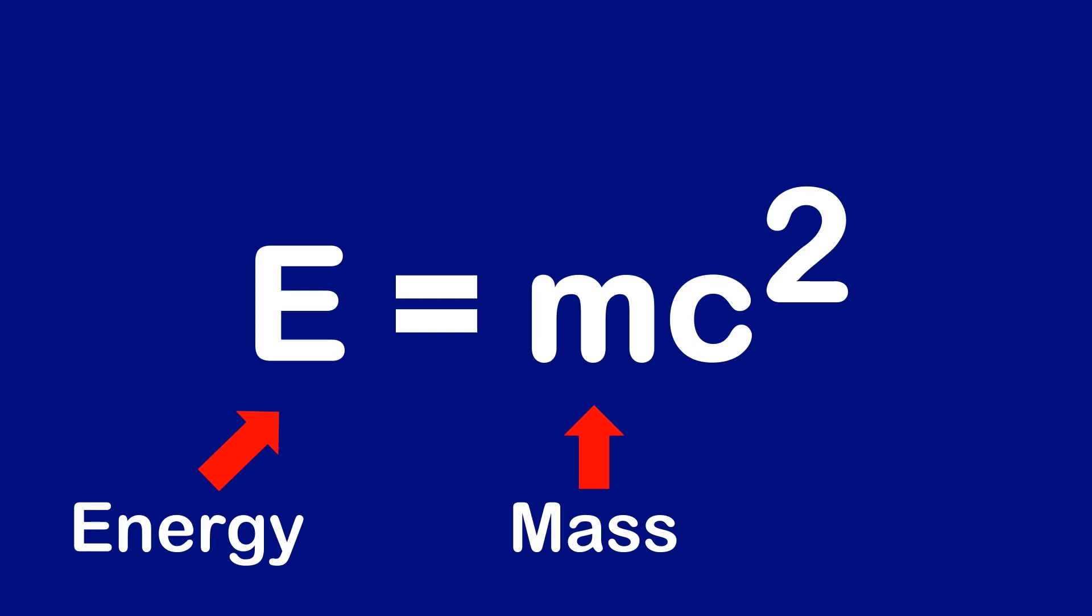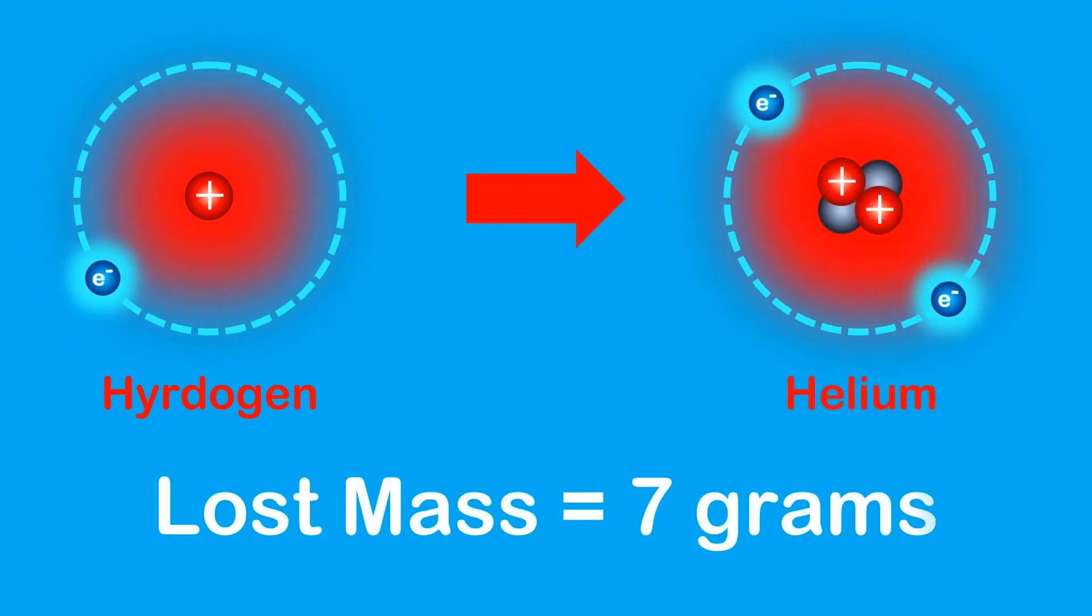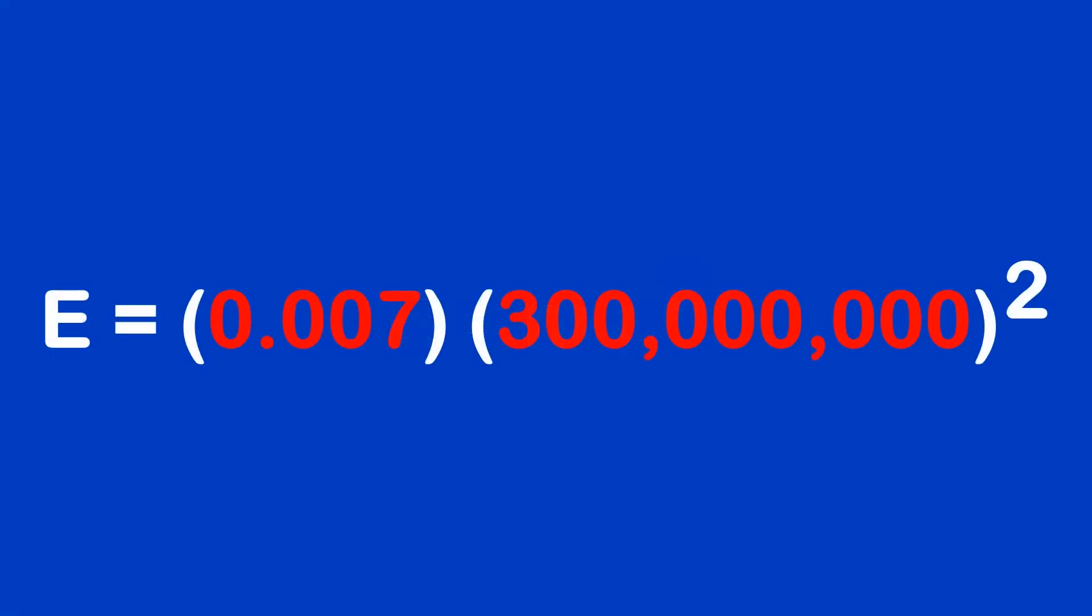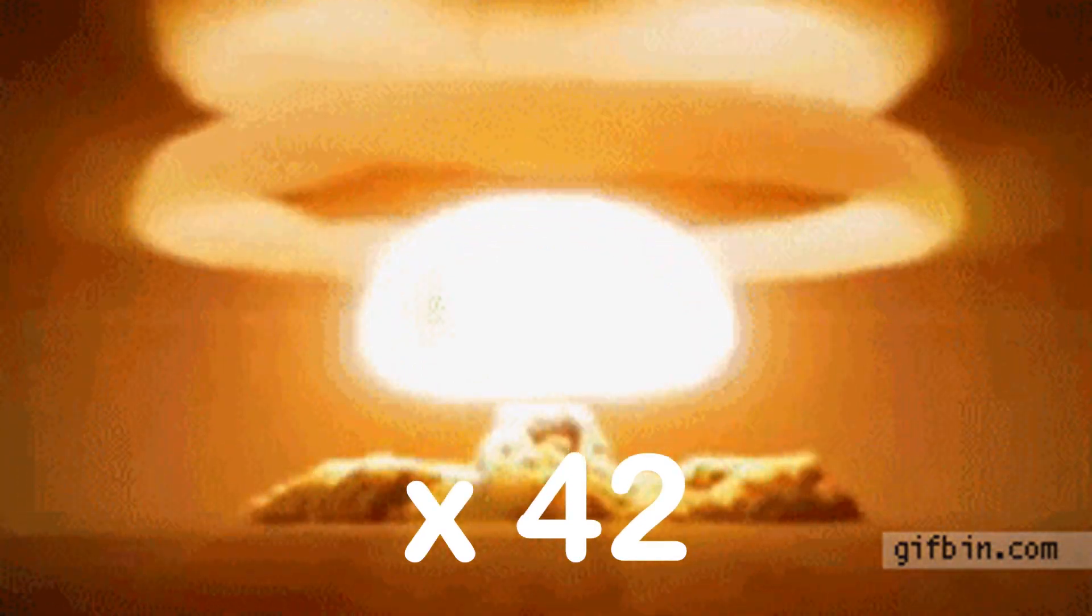So it's this missing mass which is released as energy. For example, when one kilogram of hydrogen fuses into helium, about 7 grams of mass is converted to energy. Using E equals MC squared, this equals about 600 gigajoules of energy, about 42 Hiroshima bombs, give or take.